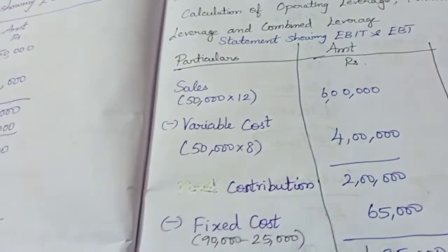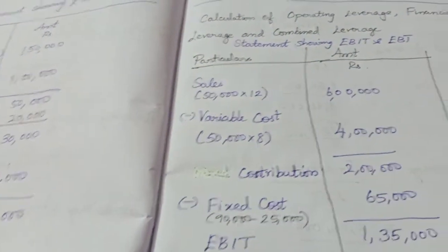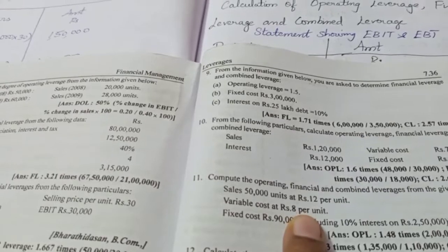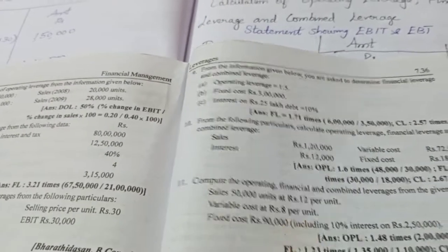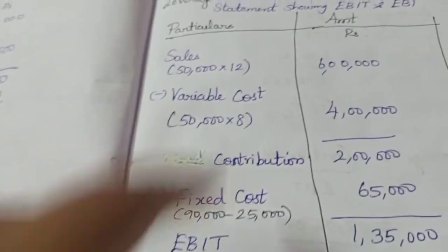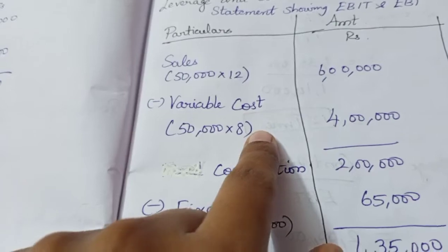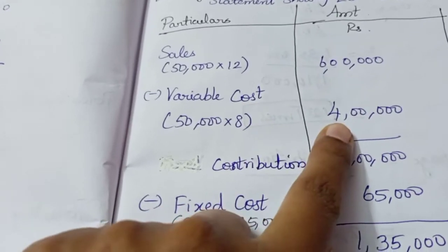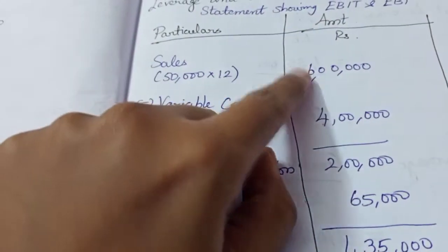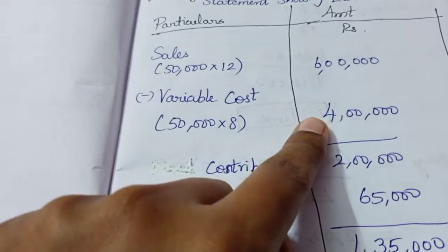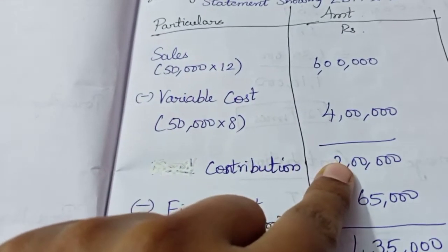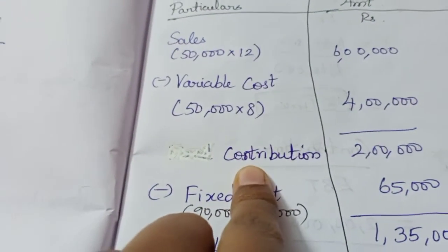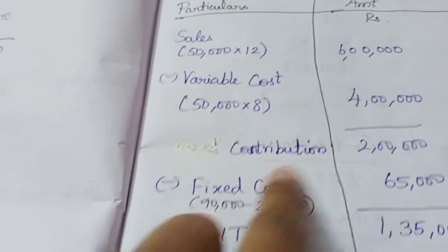Variable Cost: 50,000 units at Rs. 8 per unit. So 50,000 into 8 equals 4,00,000. Sales of 6,00,000 minus Variable Cost of 4,00,000 gives Contribution of 2,00,000.